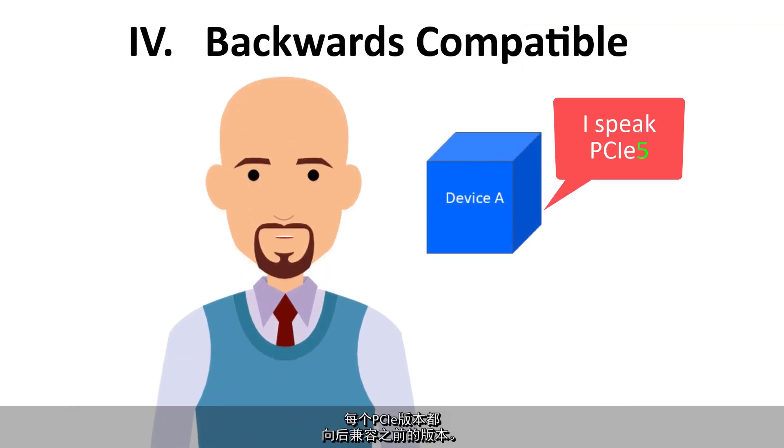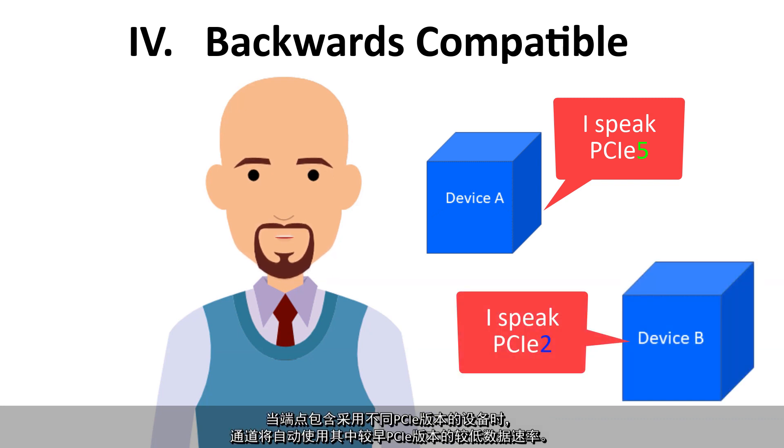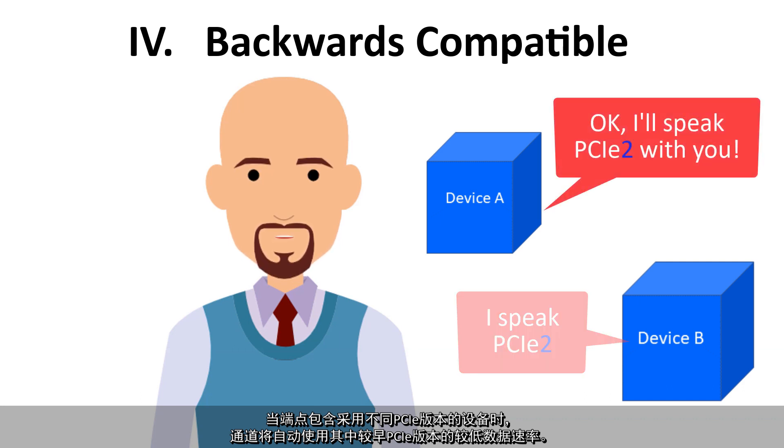Each PCIe version is backwards compatible to previous versions. When endpoints contain devices that are from different PCIe versions, the lanes automatically function at the slower data rate of the earlier PCIe version.